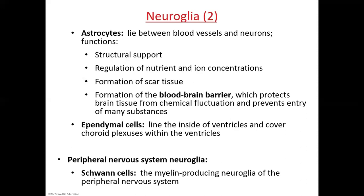Astrocytes also help form scar tissue in case of injury. Ependymal cells are another type — they line the inside of ventricles and cover the choroid plexuses within them. Ventricles are spaces within nervous tissue filled with cerebrospinal fluid, and the ependymal cells are responsible for producing that fluid.